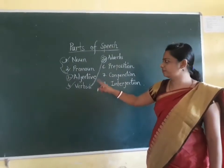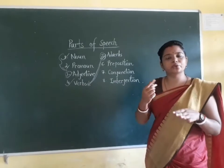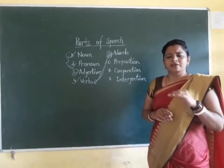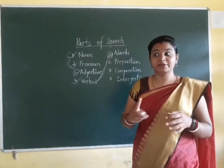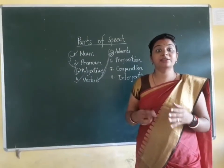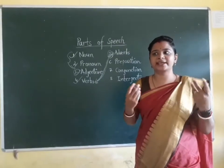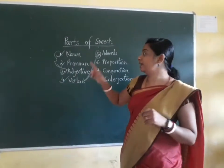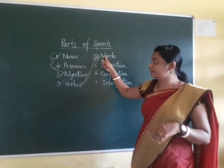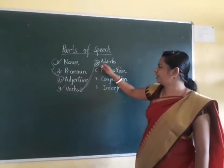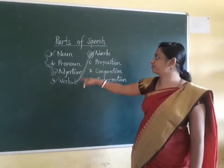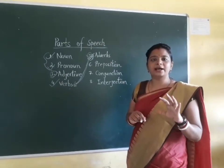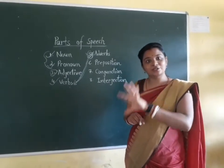Whenever we do any verb, adverbs tell us how we do that verb, when we do that verb, and where we do that verb. There will be some time, some place, and a manner of doing any verb. For example, 'write' is a verb. 'I write slowly' — slowly and very slowly are both adverbs. These adverbs are used for verbs or other adverbs.